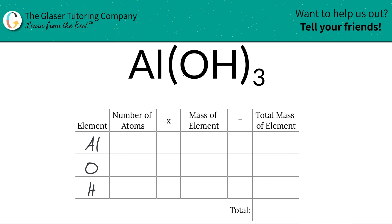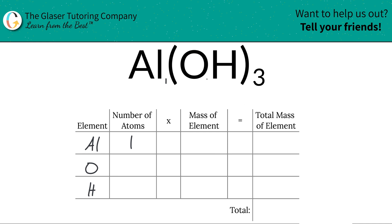Next, I'm going to write down the number of atoms of each element in this compound. At the bottom of aluminum there's an invisible one, so there is one aluminum atom in aluminum hydroxide. With hydroxide, there are three hydroxides, and in each single hydroxide there's one oxygen and one hydrogen — so in total there are three oxygens and three hydrogens. There are three atoms of each.